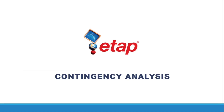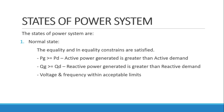Welcome back. In this lesson we will be discussing contingency analysis and how we can perform it in ETAP. First I would like to discuss the states of a power system. The power system has three states: the normal state, the abnormal state, and the restorative state.